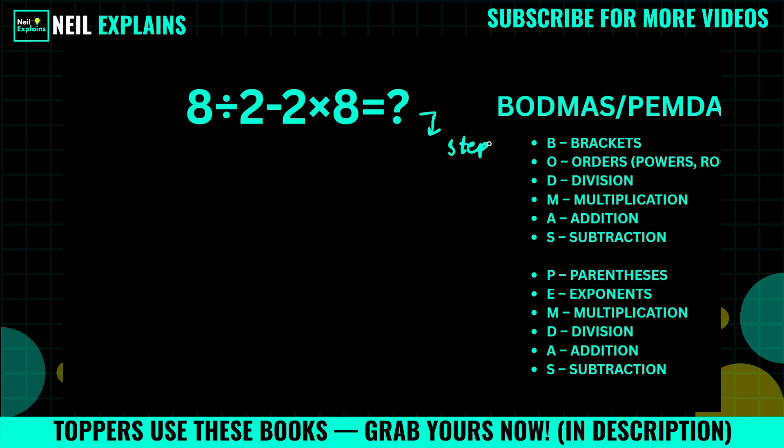Here according to PEMDAS, we have P for parentheses, E for exponents, M for multiplication, D for division, A for addition, and S for subtraction. So first we will do multiplication in this case. The question will become 8 divided by 2 minus 8 times 2, that is 16.